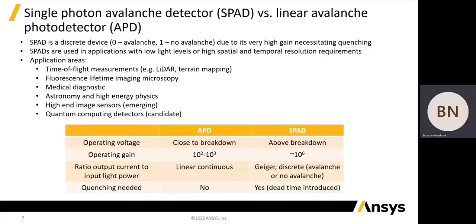This table summarizes the main differences between the linear mode APDs and Geiger mode SPADs, with the main differences being in the operating voltage, the operating gain, and the need for quenching.